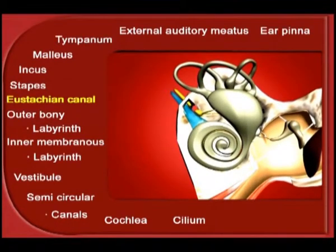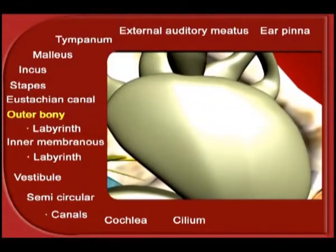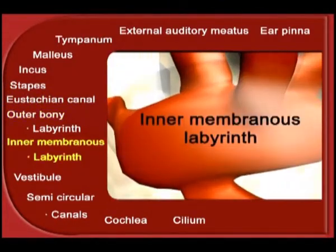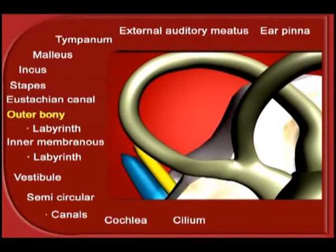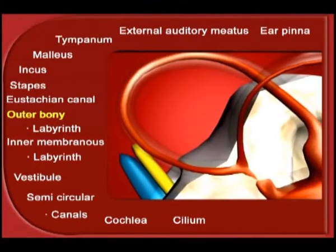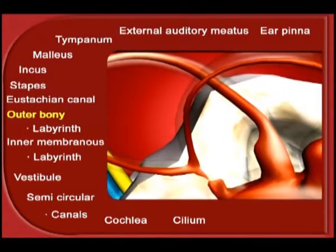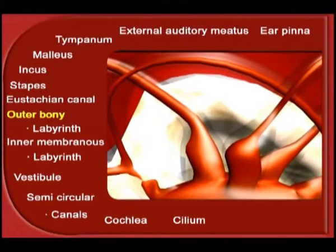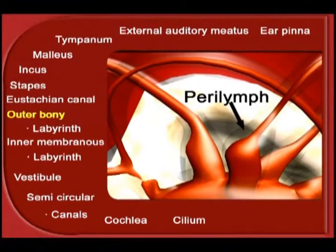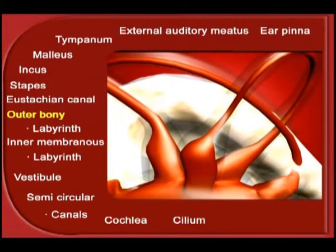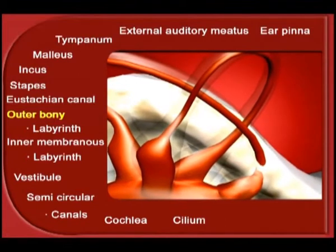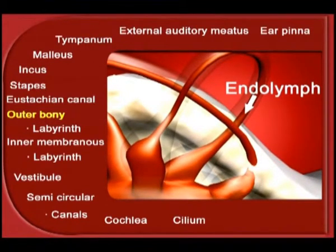The stapes is connected to the inner ear. In the inner ear, we have two cavities: the outer bony labyrinth and the inner membranous labyrinth. The outer bony labyrinth is made up of bones, and the inner cavity is surrounded by a membrane. The cavity of the outer bony labyrinth is filled with a fluid called perilymph, whereas the inner membranous labyrinth is filled with a fluid called endolymph.